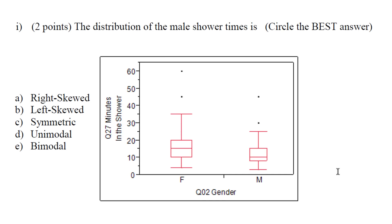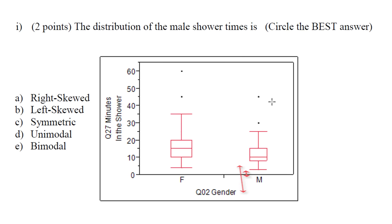Box plots don't give us the best view of what is going on with the data, but we do notice one thing: there are outliers in the male distribution. You'll also notice that from the median to Q3 is further than the median to Q1, and from the median to the max is a much longer distance. So the distribution is pulled out towards the high side — this means it is skewed to the right.